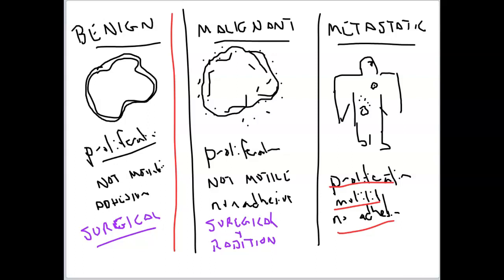There are some interesting facets of metastatic cancer: the primary tumor actually secretes inhibitory molecules that stop the secondary tumors from growing, because the primary tumor doesn't want competition for resources and nutrients. That's why sometimes when the primary tumor is removed surgically, patients quickly succumb to secondary tumor growth — with those inhibitory molecules gone, the secondary tumors start to grow. So we've moved further and further away from a surgical option for metastatic tumors because of this.